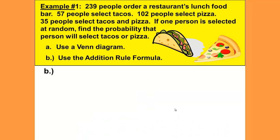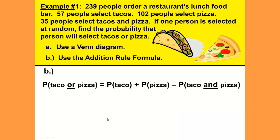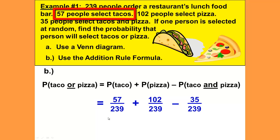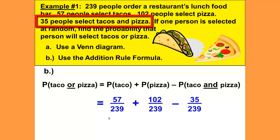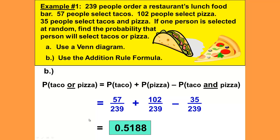For part B we will use the addition rule formula. The probability of taco or pizza equals the probability of taco plus the probability of pizza minus the probability of taco and pizza. The probability of taco is 57 over 239, plus the probability of pizza which is 102 over 239, minus the probability of taco and pizza — subtracting out the ones we counted twice — so that's minus 35 over 239. And again that gives us 0.5188.